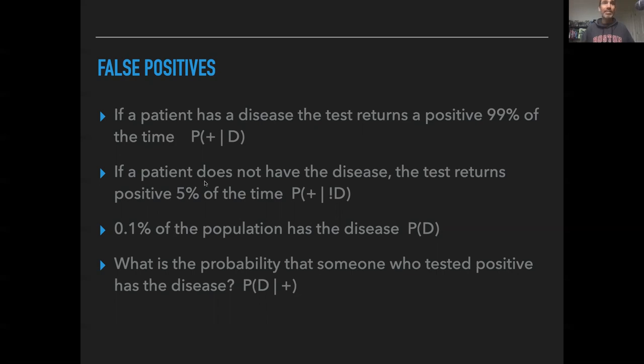The other thing that's important to know about a test is the rate of false positives. So if a patient does not have the disease, the test returns positive 5% of the time, P(+|¬D). This particular test has a 5% rate of false positives, which seems non-trivial, but that seems pretty low. And let's imagine that we're running a test where 1 in 1,000 people has this disease. So it's a 0.1% probability, P(D), that you have a disease if I just pick someone at random.